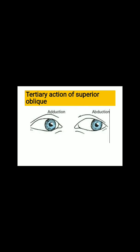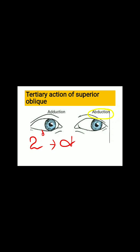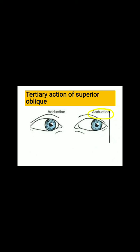The third action of the superior oblique, also called the tertiary action, is abduction. To revise: the primary action is intorsion, the secondary action is depression in adduction, and the tertiary action is abduction.